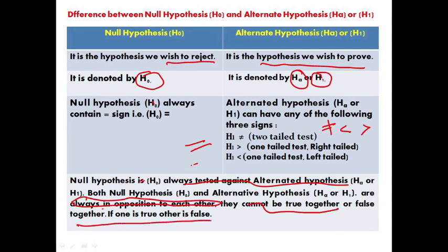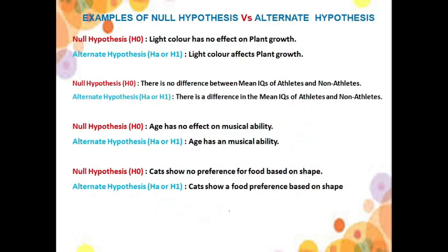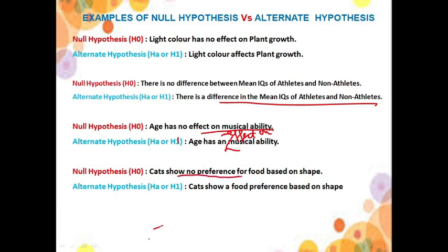Some examples: null hypothesis says light color has no effect on plant growth; alternate hypothesis says light color affects plant growth. Null hypothesis says there is no difference between mean IQs of athletes and non-athletes; alternate hypothesis says there is a difference. If null hypothesis says heredity has no effect on musical ability, alternate hypothesis says heredity has an effect. If null says cats show no preference for food based on shape, alternate says cats show a food preference based on shape.